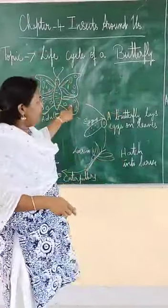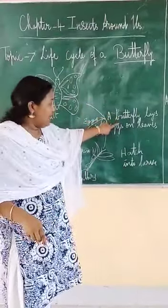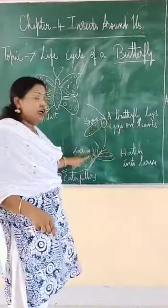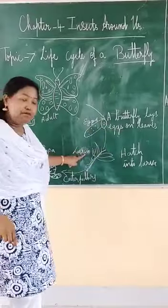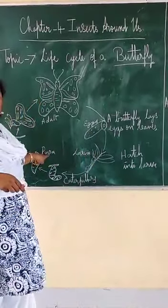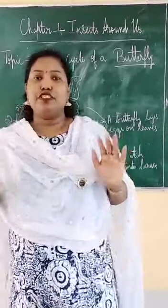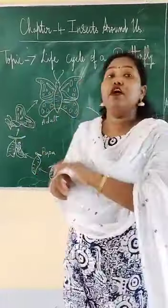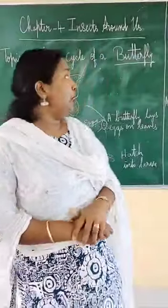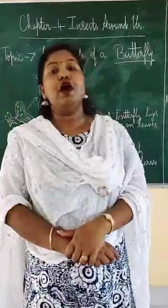Again, the butterfly lays eggs on leaves, and these eggs hatch into larva. These larvae grow into a caterpillar, and the caterpillar eats leaves and grows into pupa, and then an adult butterfly. So this is the life cycle of a butterfly. Today I have taught about the body parts of an insect and the life cycle of a butterfly.